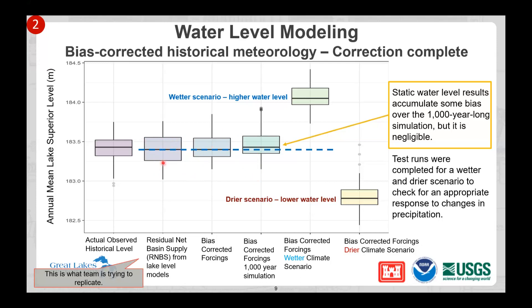We've also taken the additional step, as shown in the green and yellow boxes on the slide, to run test runs for a wet scenario and a dry scenario to make sure the weather generator is producing results that are picked up through the lake level models, and we've been successful. This is really great news. Today we're excited to share our proposed plan for the climate scenarios now that we've achieved the baseline.